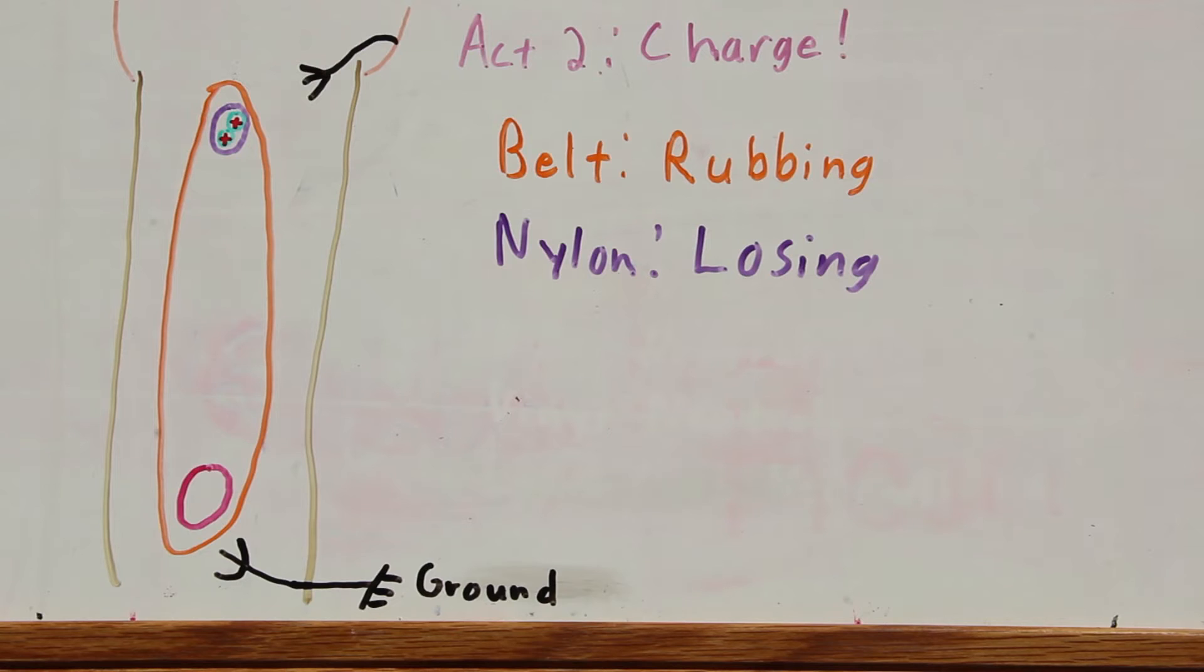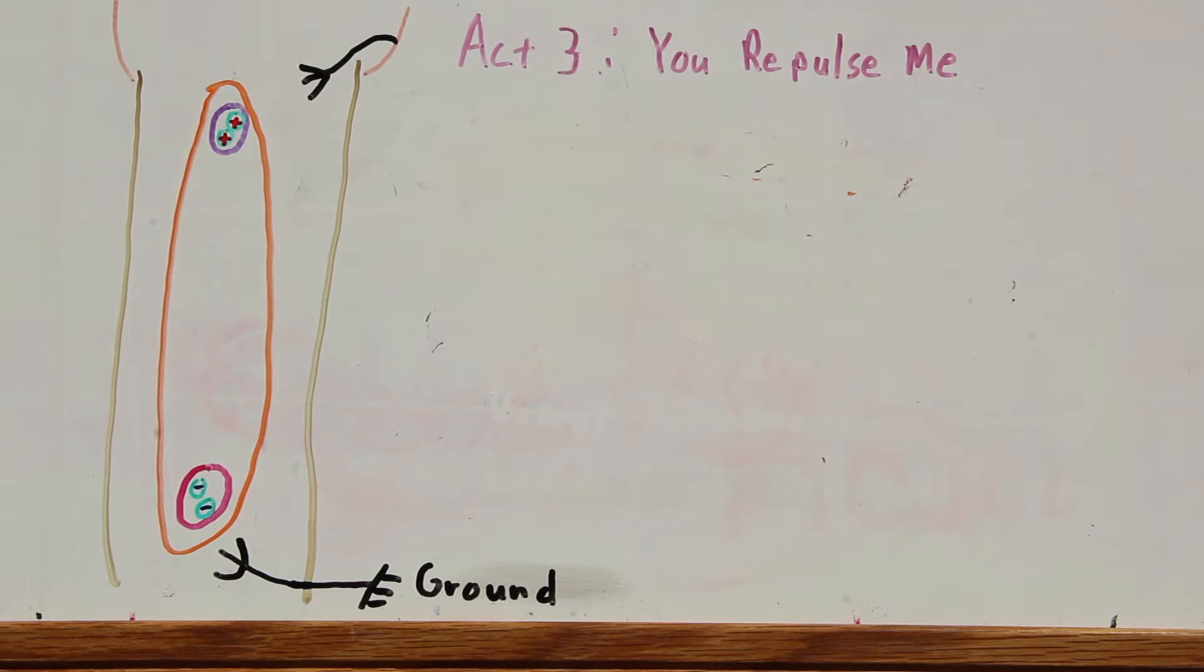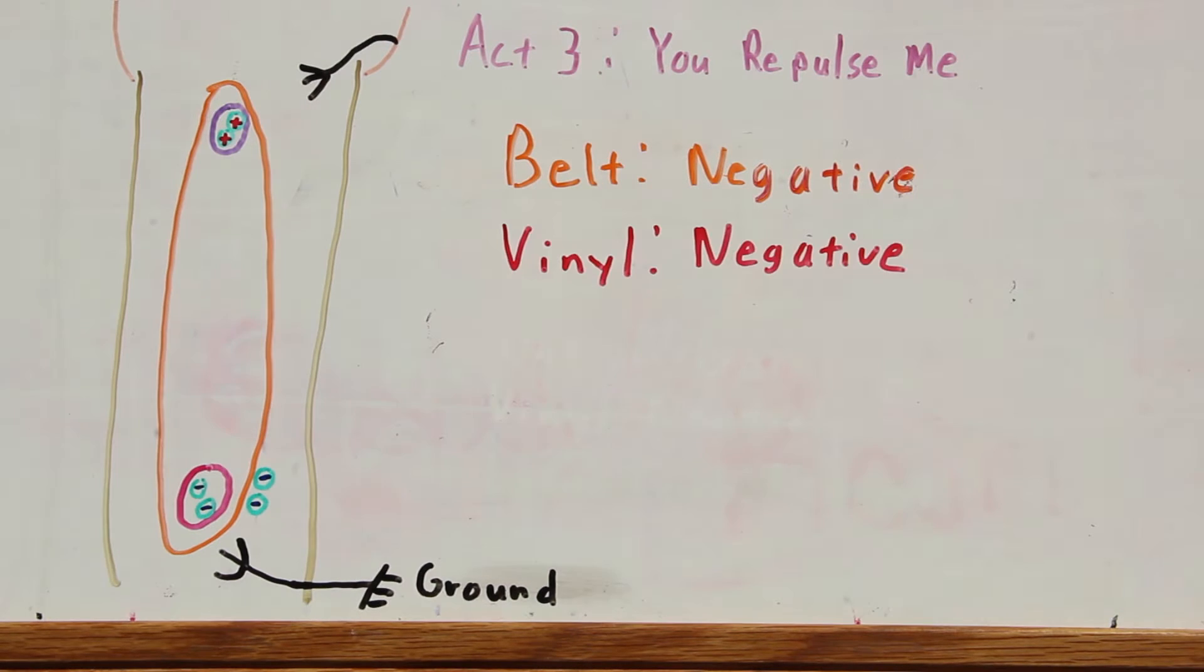As the belt rubs against the nylon roller, it loses electrons and becomes positively charged. The vinyl roller gains electrons and becomes negatively charged. After this charge is built up, the belt brings down electrons to the lower vinyl roller. Since this roller is already negatively charged, it repels the electrons on the belt.